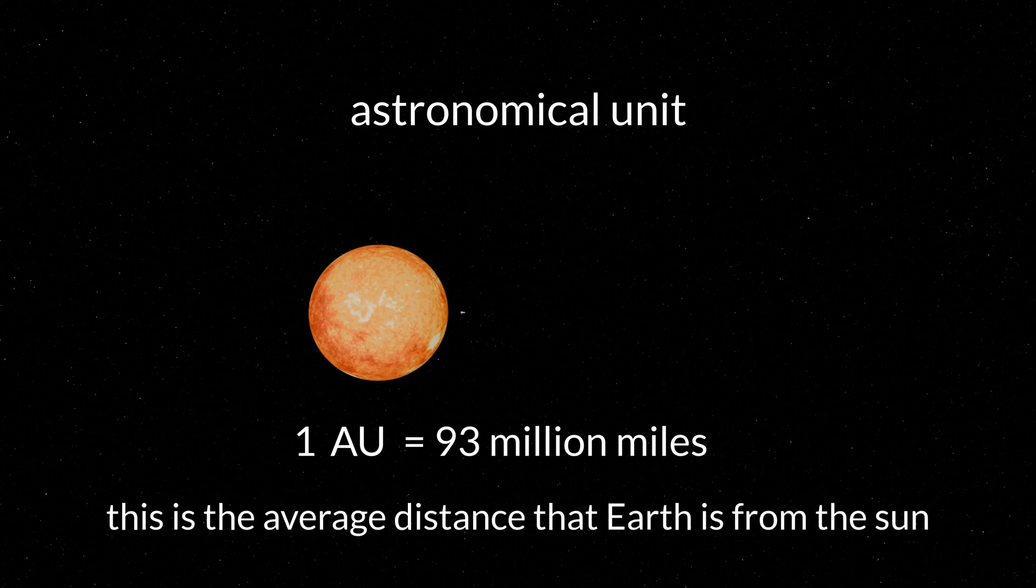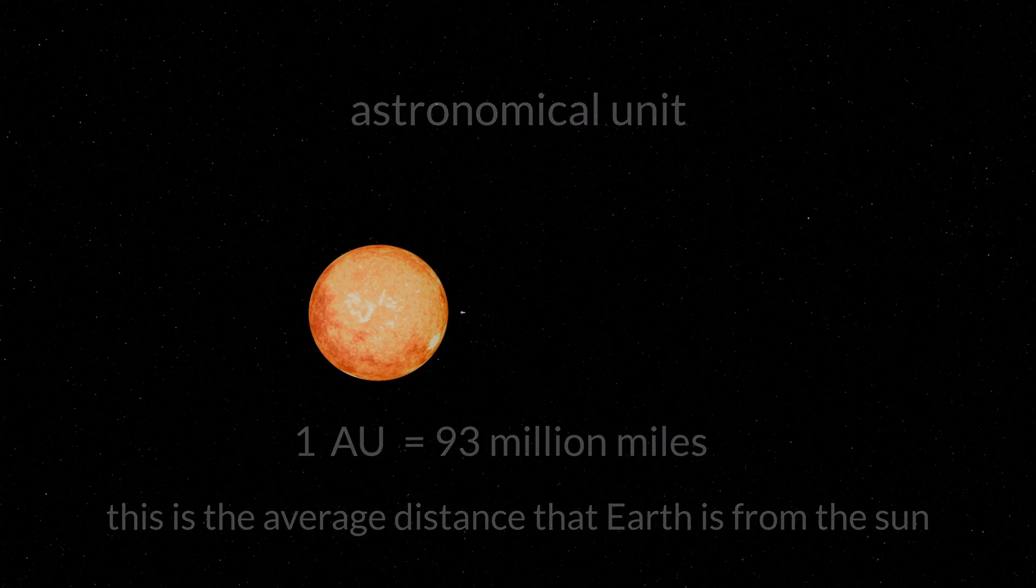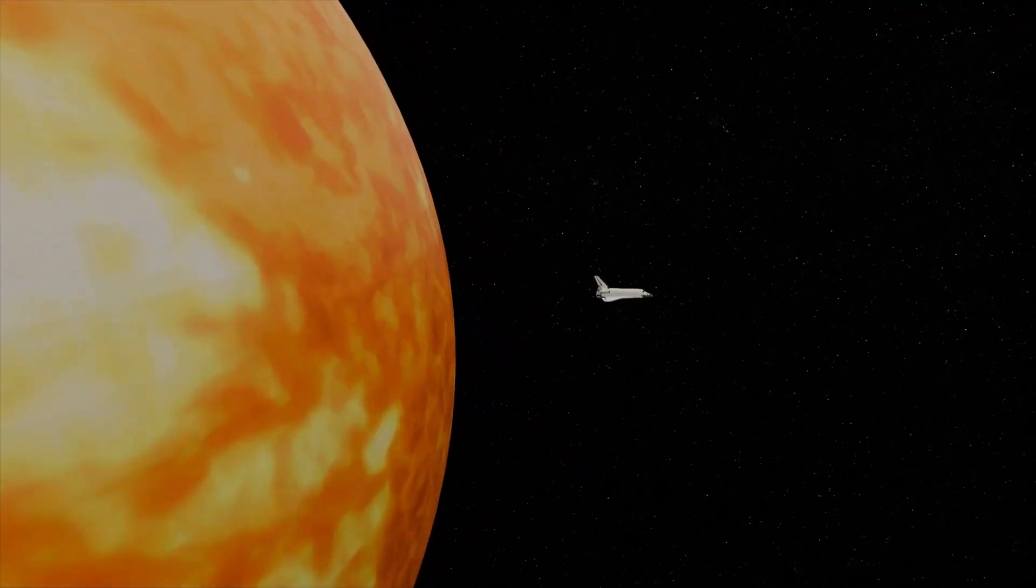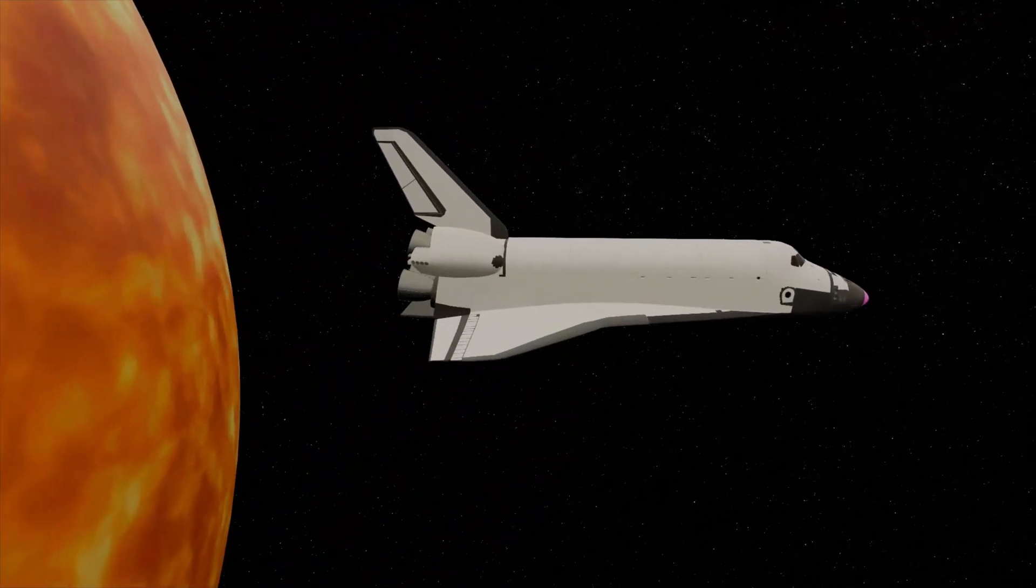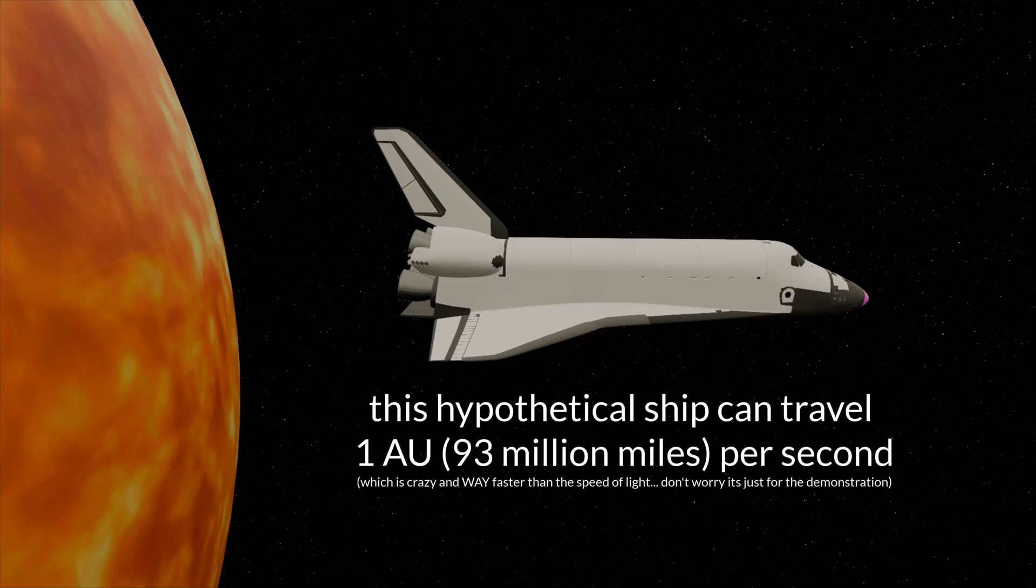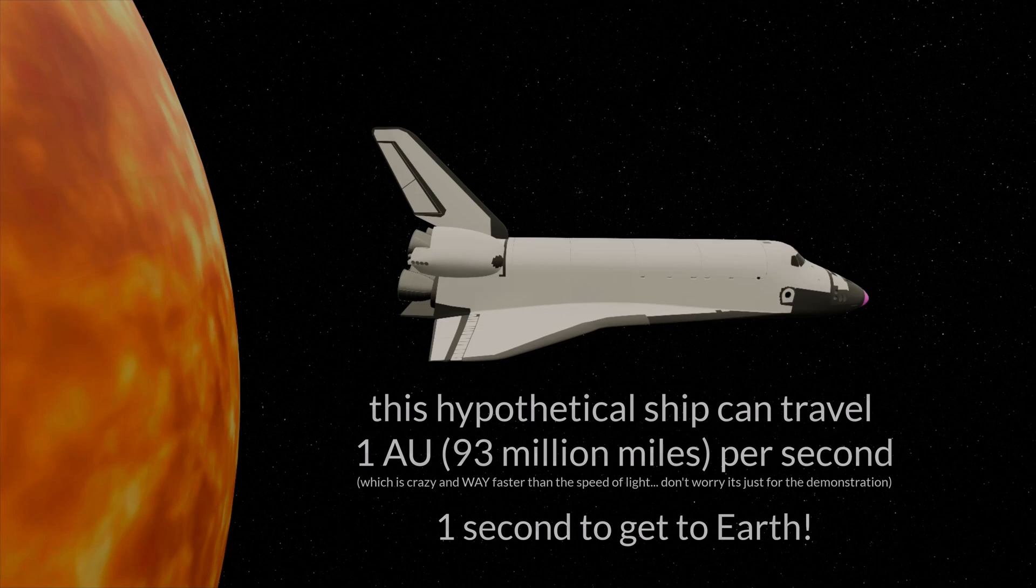So, the Earth sits at one AU from the Sun, around 93 million miles away. For the sake of showing the distances in this animation, let's say that we are traveling in a spaceship that starts directly at the Sun and can travel 93 million miles per second, or one AU per second. So, it would take us one second of travel time to get to Earth. But what about the other planets?